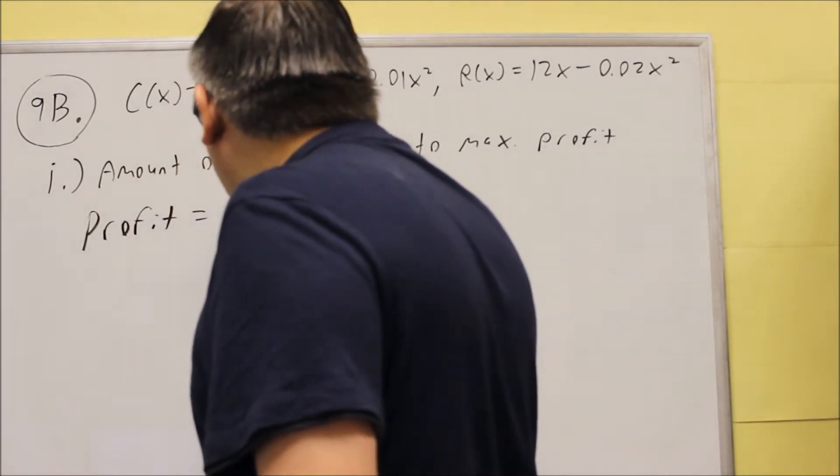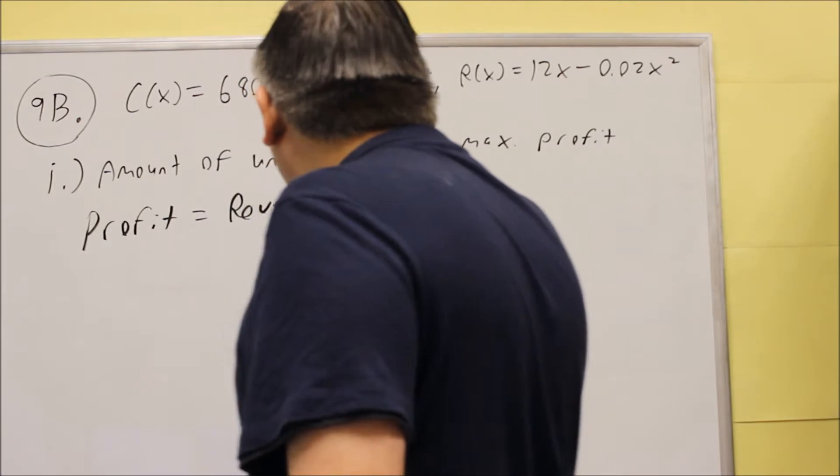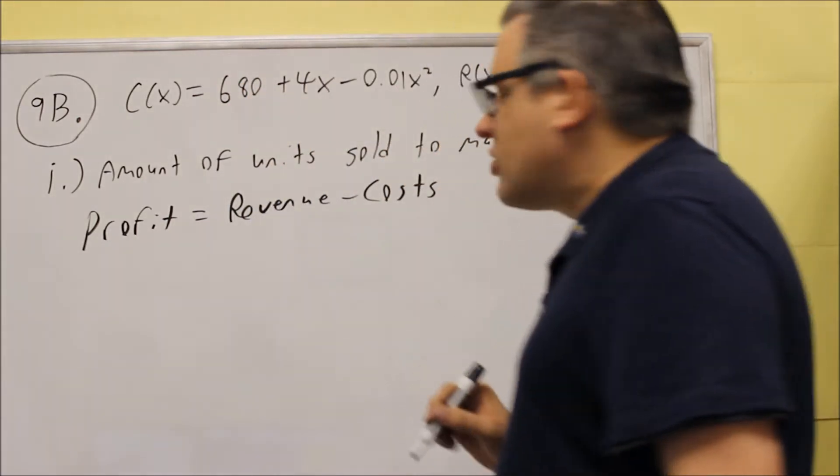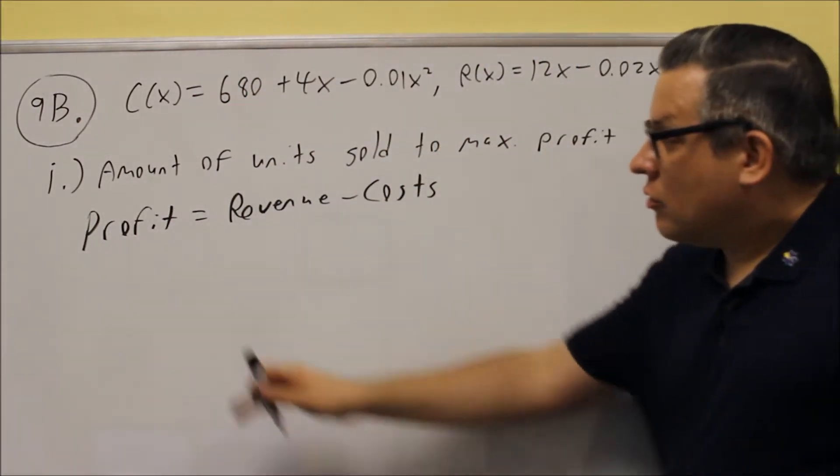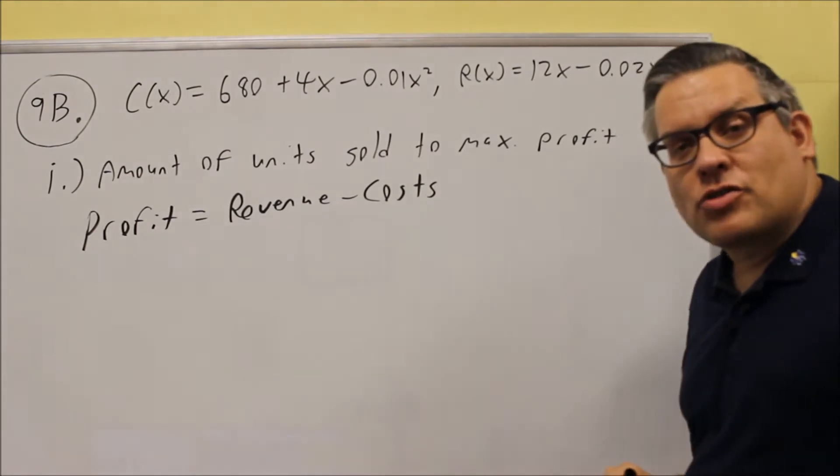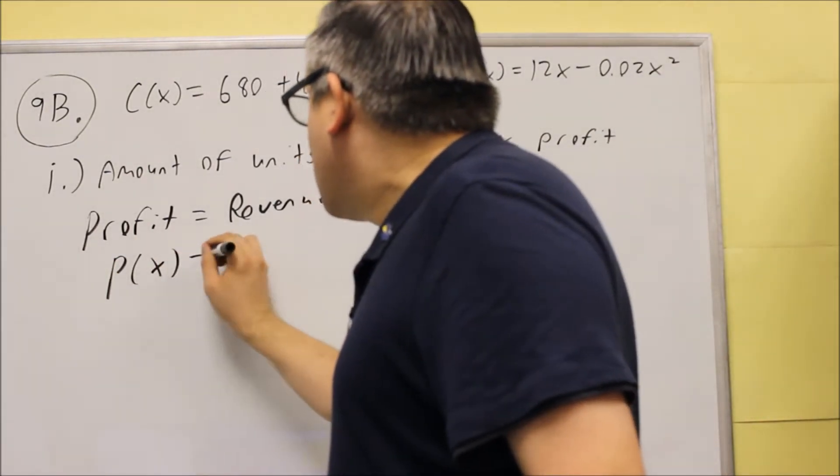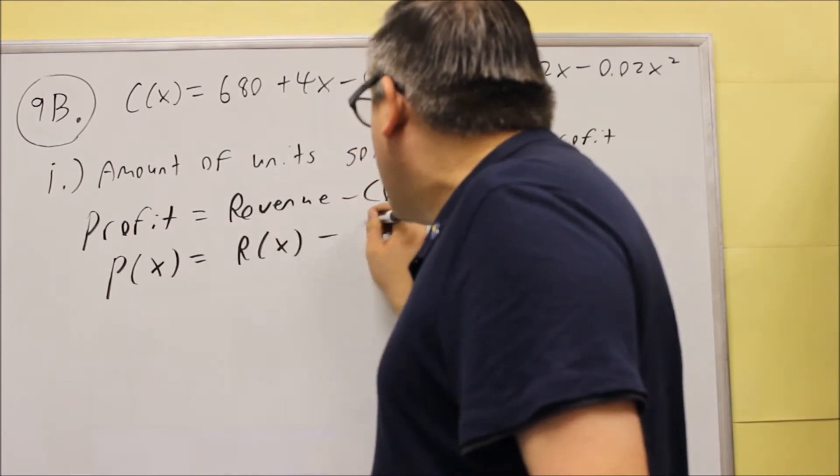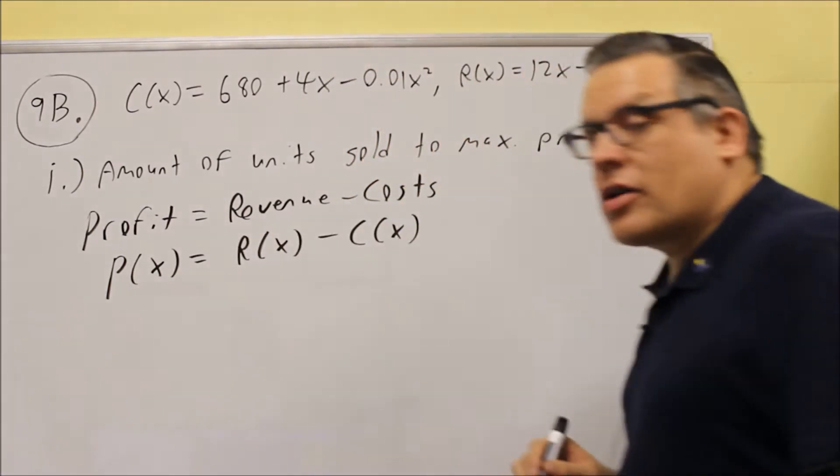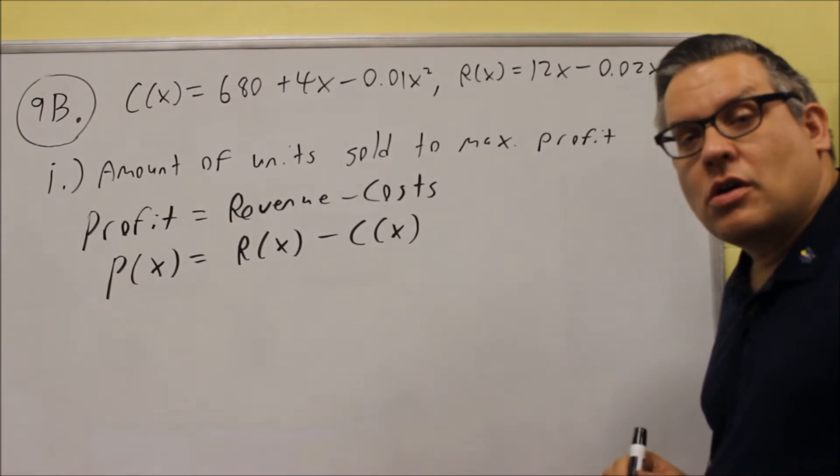Profit is equal to the revenue minus the cost. So revenue minus cost will give you the profit function. So in our case, we're going to do P(x) is equal to R(x) minus C(x), the revenue function minus the cost function.